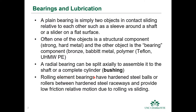Rolling element bearings have hardened steel balls or rollers between hardened steel raceways and provide low friction relative motion because they are rolling versus sliding. When we think about bearings in the traditional engineering sense, we're usually thinking about rolling element bearings, which can be ball bearings or needle bearings — radial bearings or thrust bearings. But in the true definition, a bearing is just any two materials in contact with relative motion, and also includes bushings, which is a bearing surface around a shaft.